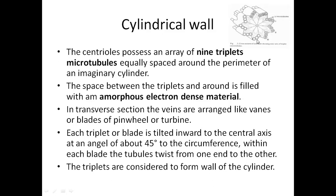At the center of the nine triplets arrangement you can see veins arranged like blades of a pinwheel — a cartwheel or pinwheel kind of arrangement. The triplets are arranged at a particular angle to the circumference of around 45 degrees, and the nine triplets of microtubules form the wall of the centriole.